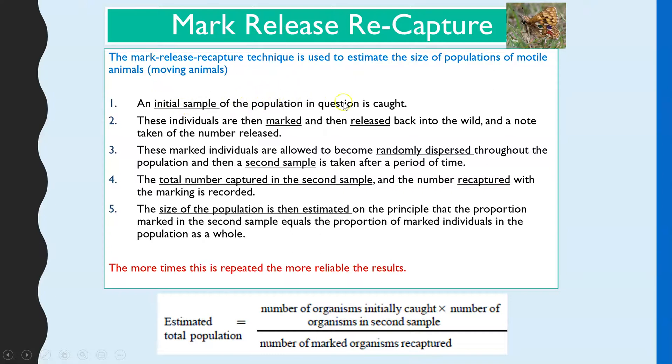Step one: you need to take an initial sample, and once you've captured them, you mark them in a non-toxic way, so a paint that's not going to cause any harm, and then you'd release them back into the wild. Leave them long enough to randomly disperse through the population.